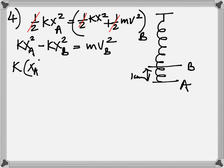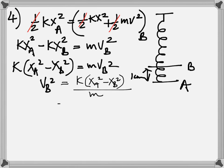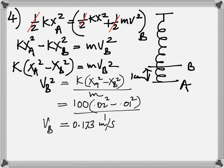After that, it's math. Cancel the halves, rearrange. What are we looking for? Speed. So we're looking for VB. Make VB the subject. VB squared is K XA squared minus XB squared divided by the mass. Plug the numbers in. K is 1 newton per centimeter. You cannot use that. It should be 100 newton per meter. Then XA, XB, both changed into meters. You get 0.173 meter per second.